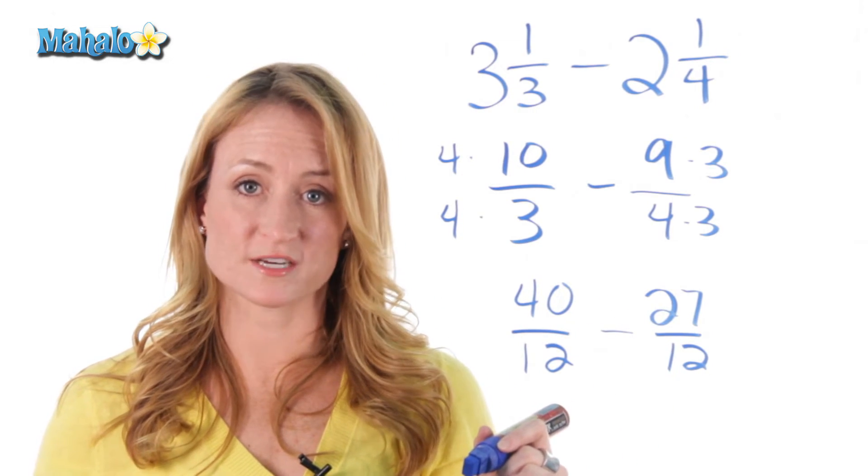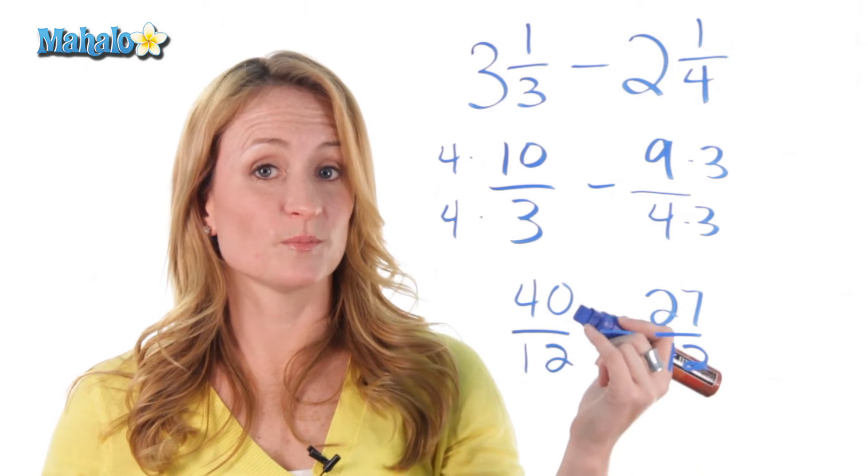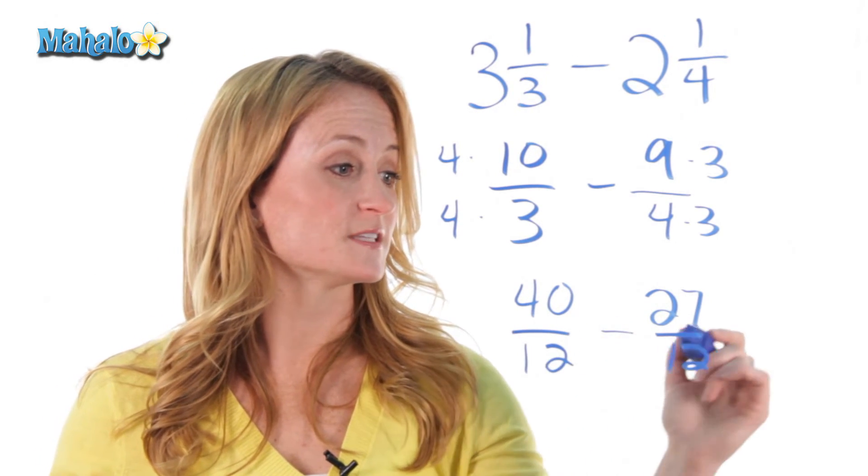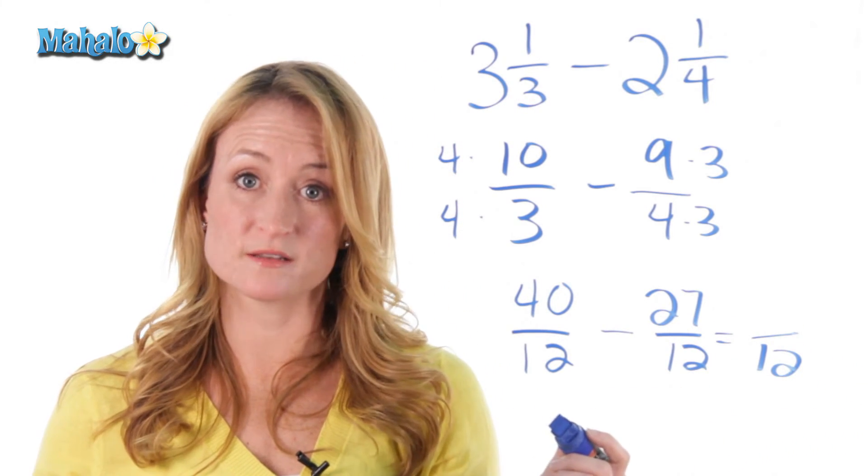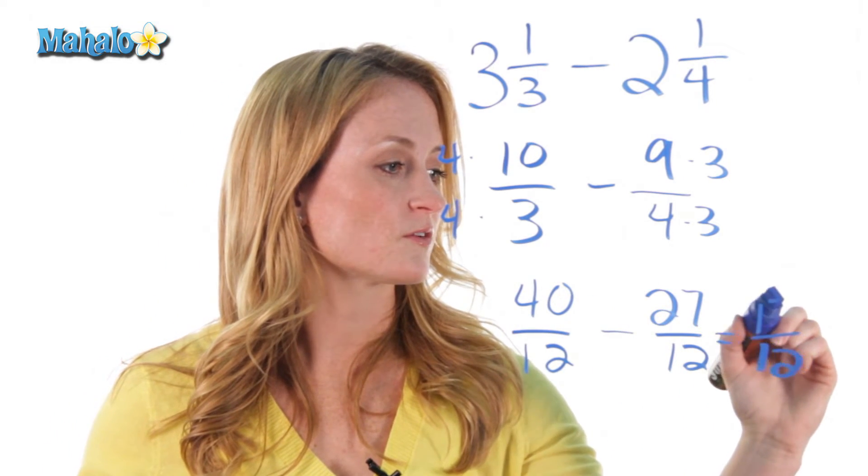So, now we have two fractions with a common denominator, so now we can subtract. And you remember that the rules of adding or subtracting fractions is you leave the denominator the same, and you just subtract or add the top. So, in this case, we're going to subtract. So, 40 minus 27 is 13.